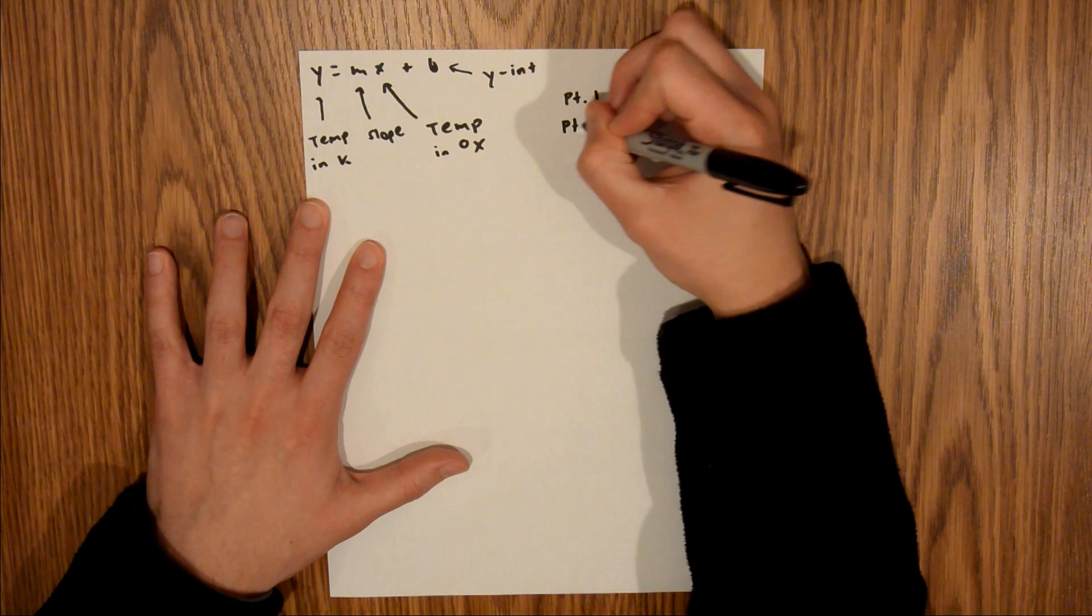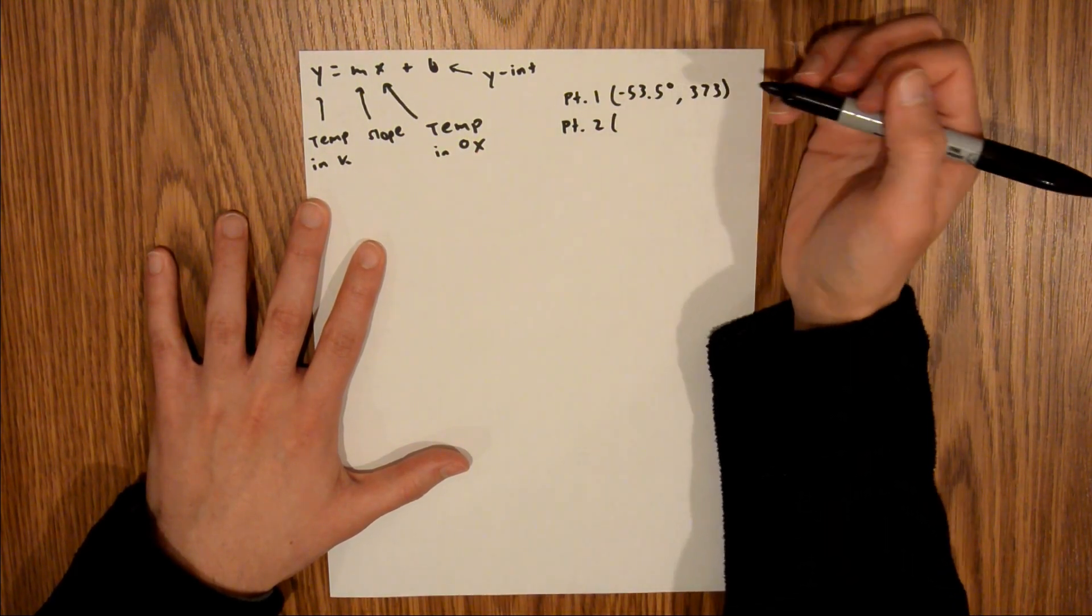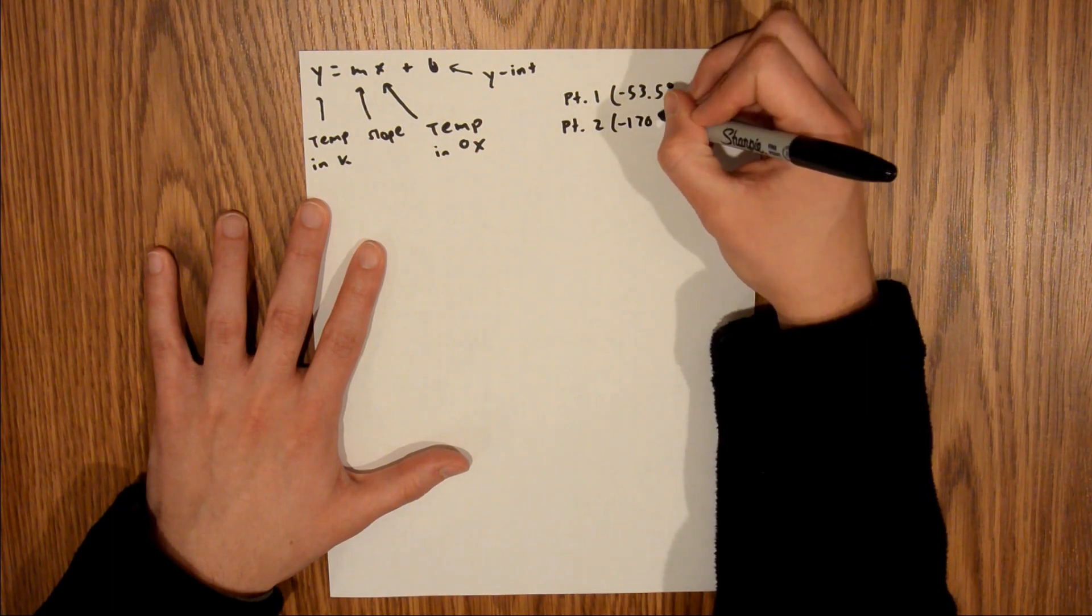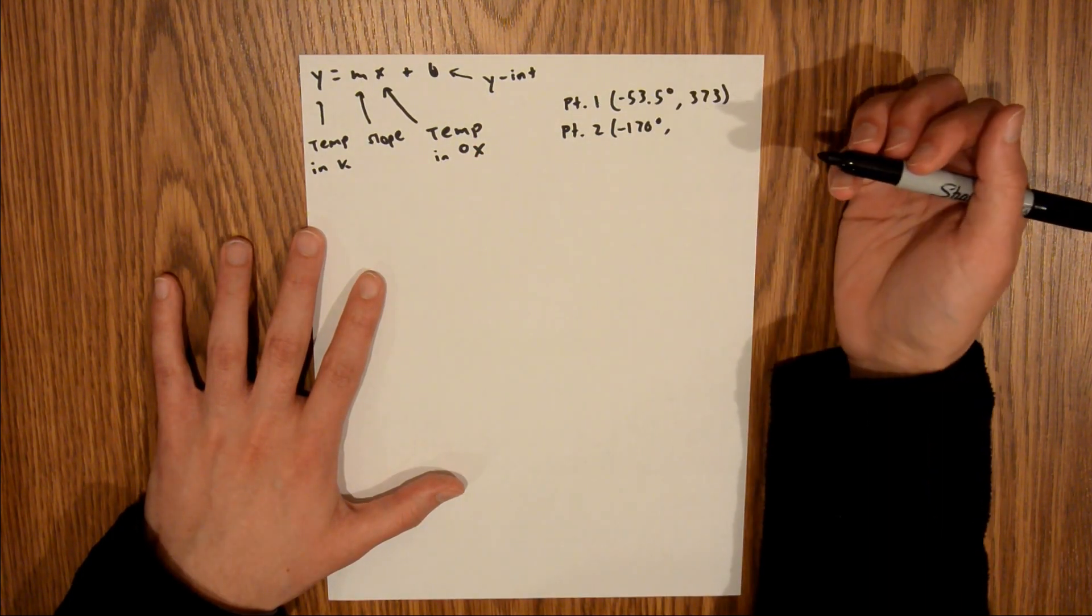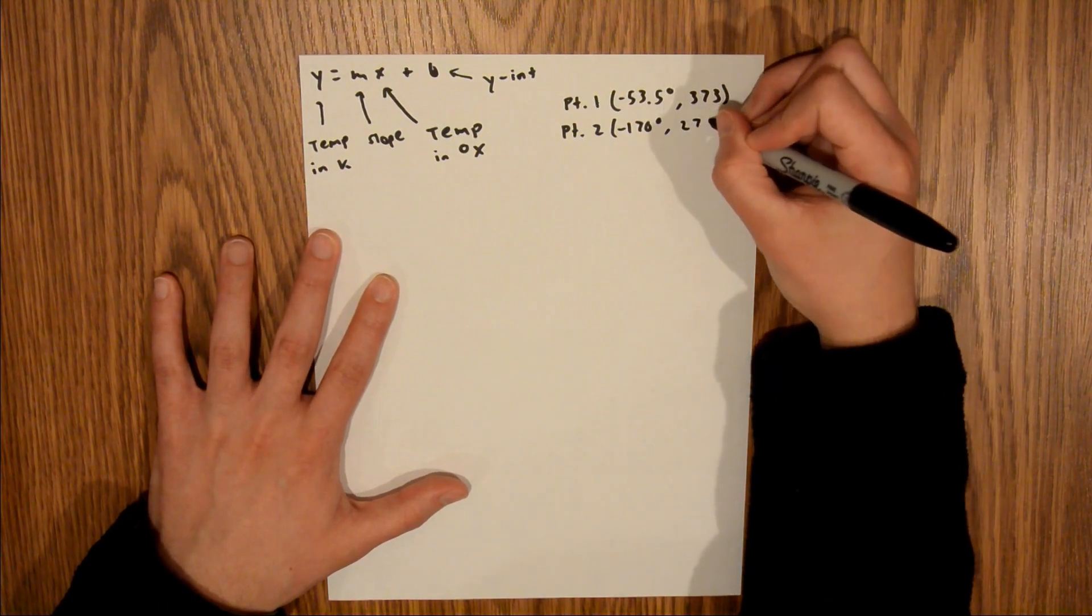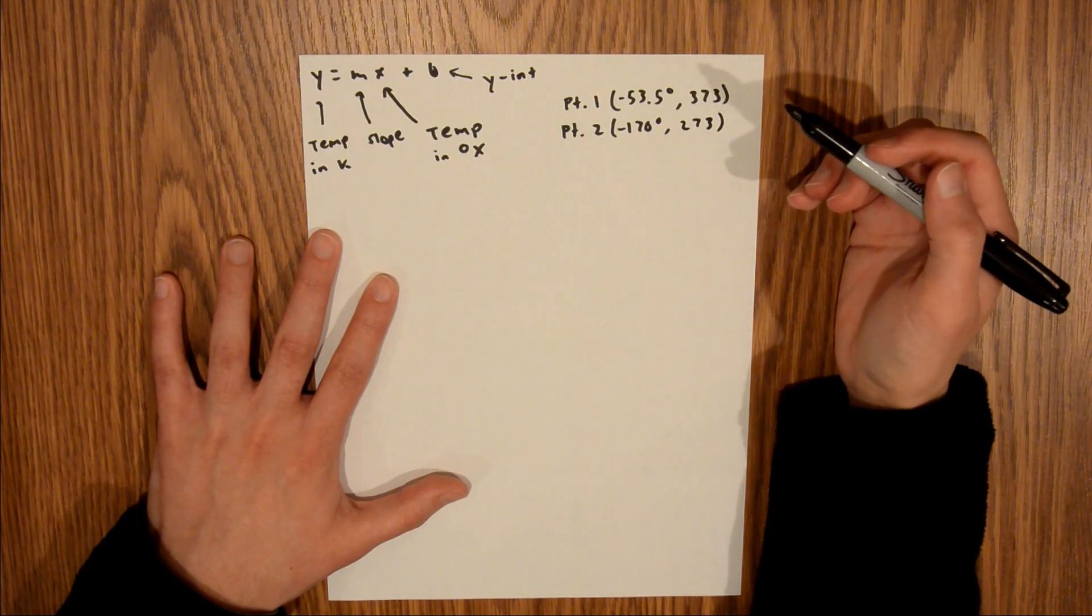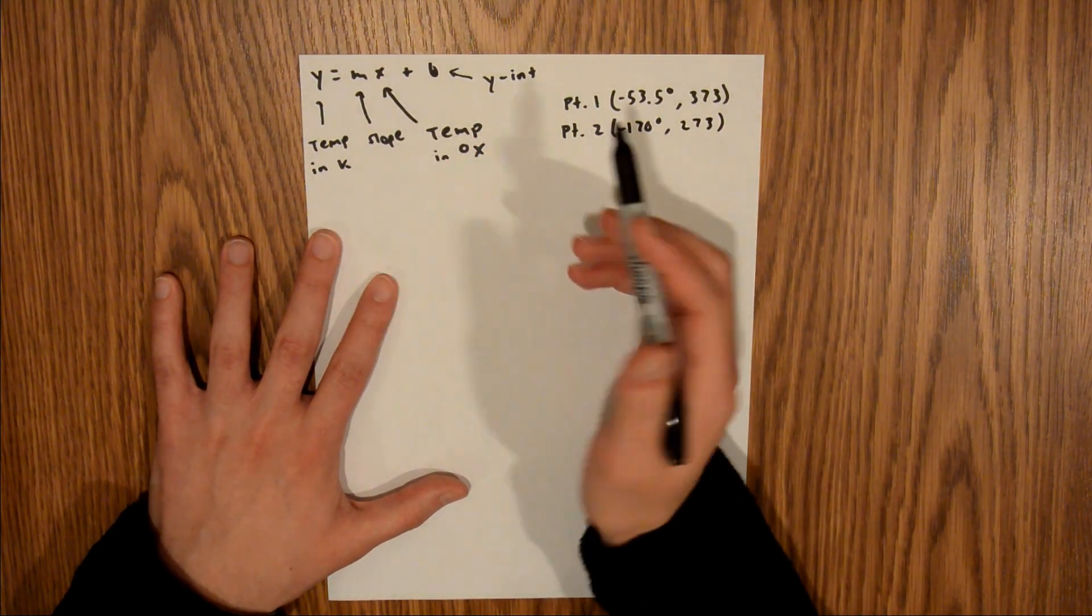and now our second data point is for freezing. We're told that in degrees x, this is negative 170, and we know that water's freezing point in Kelvin is 100 degrees less than its boiling point, so we'll say this is 273K. Those are our two data points, and now we can plug those into our generic form.